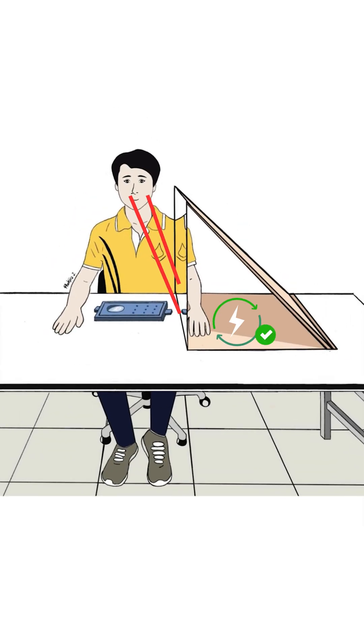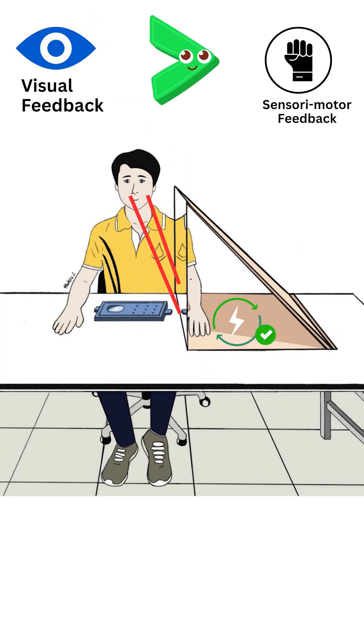The brain processes visual information very powerfully. It tricks the brain into thinking that the affected side is active. Visual feedback becomes stronger than sensory or motor feedback, and this activates motor areas of the brain related to the paralyzed limb.